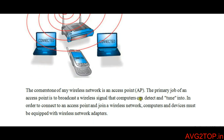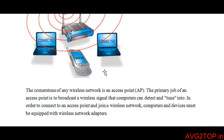Wi-Fi works like an access point — a single point where various devices are connected and signals are broadcasted. For example, computers and cell phones can see the network name or signal on their devices, and this is received using wireless network adapters, which receive the wireless signals.